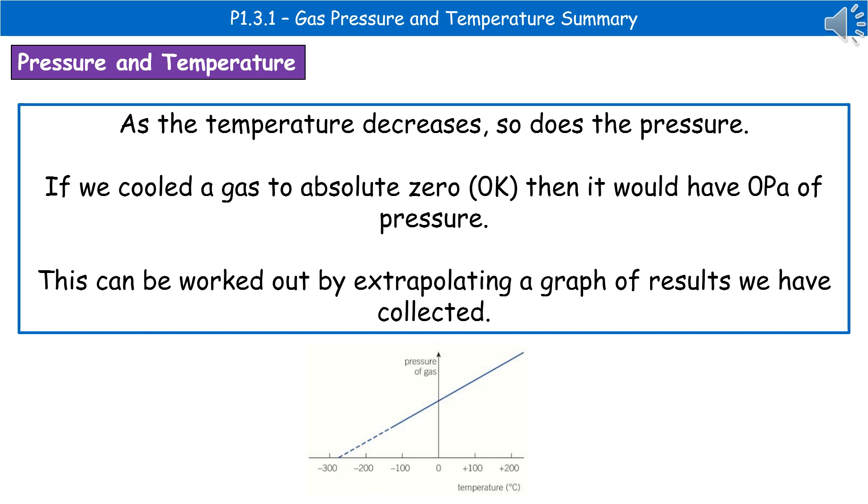You could do this experiment, heat the gas up to different pressures and take those readings, plot them on a graph. Then by extending your line, extrapolating a line, we can see what pressure we'd have at those temperatures that we haven't achieved.